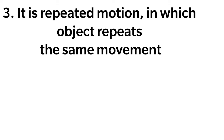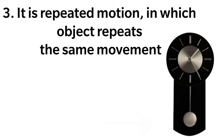Coming to the third type of motion, that is oscillatory motion. In this, the object is said to be in repeated motion because the object repeats the same movement.